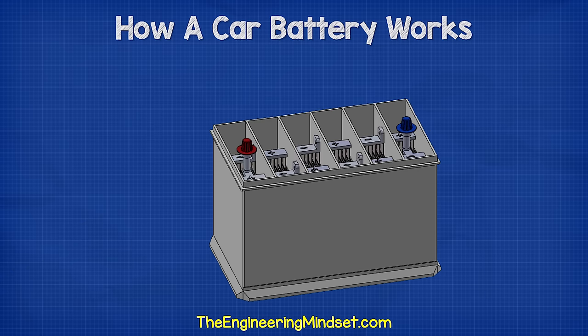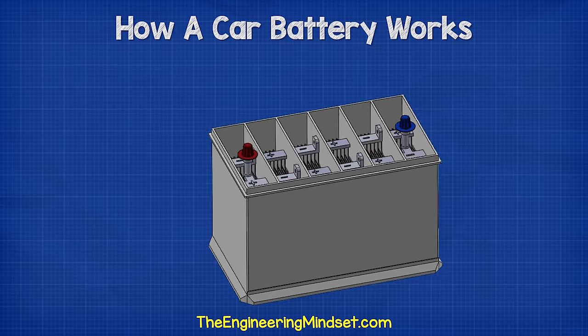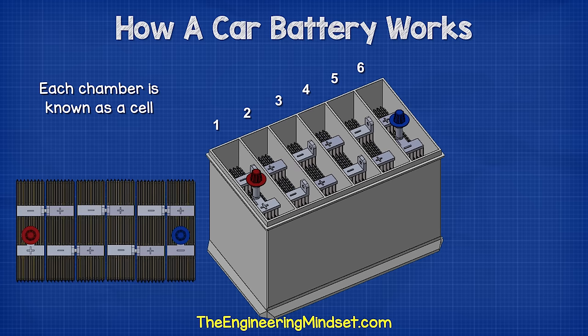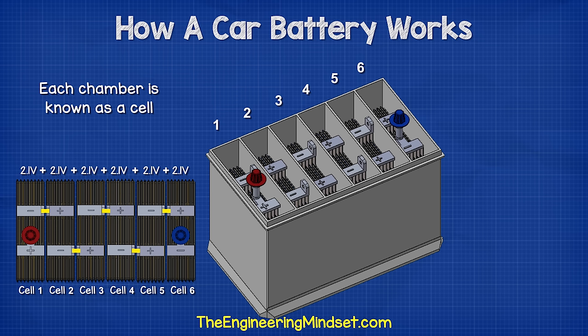By removing the lid we can see inside. Notice the casing is divided up into six separate chambers, each separated by a plastic wall. Each chamber is known as a cell. Each cell generates around 2.1 volts of DC, or direct current.